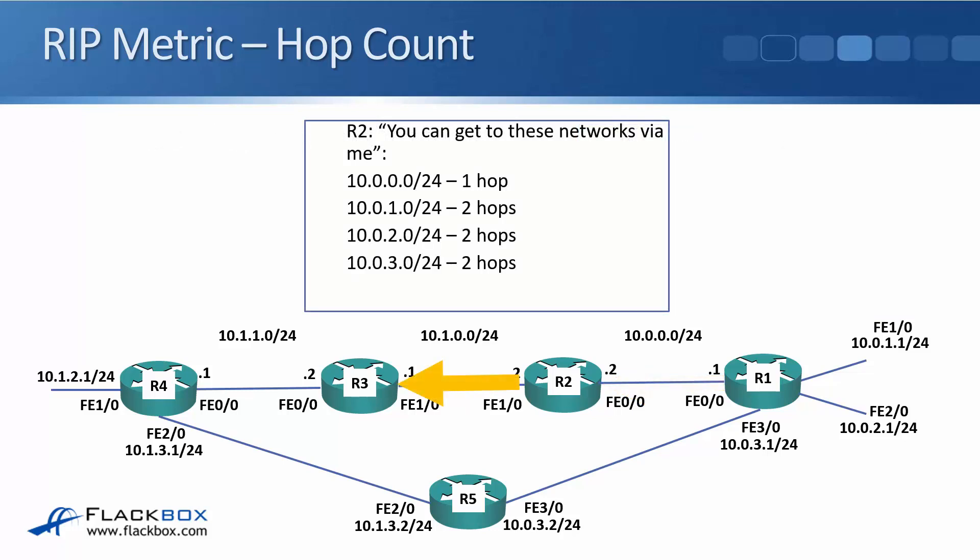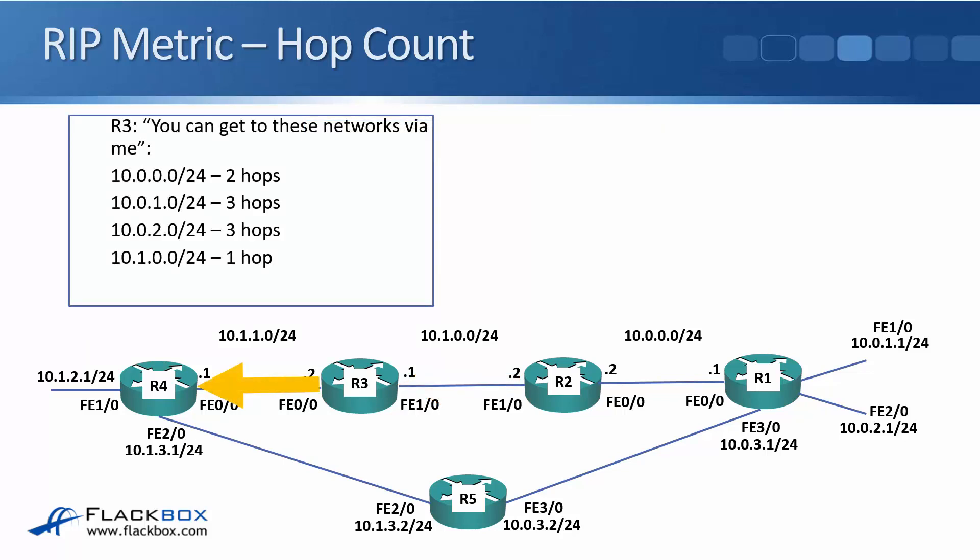R2 updates its routing table and passes the information on to R3, saying: 10.0.0.0/24 is one hop because R2 is directly connected to it, and 10.0.1.0/24, 10.0.2.0/24, and 10.0.3.0/24 are two hops away. R3 then passes the information on to R4, telling it: 10.0.0.0/24 is two hops through R3, 10.0.1.0/24 and 10.0.2.0/24 are three hops away, and 10.1.0.0/24 is one hop away.